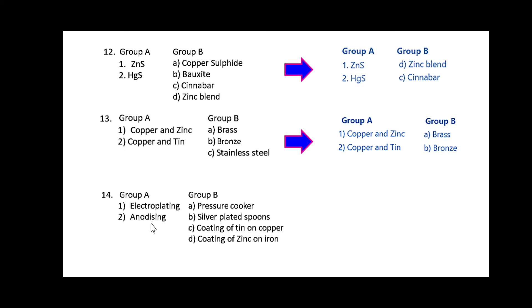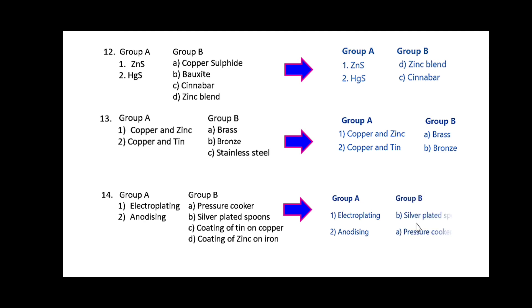Here electroplating and anodizing technique are given. In group B those are matched as follows: electroplating — a silver plated spoon is used as an example. In the anodizing technique, a pressure cooker is the best example.